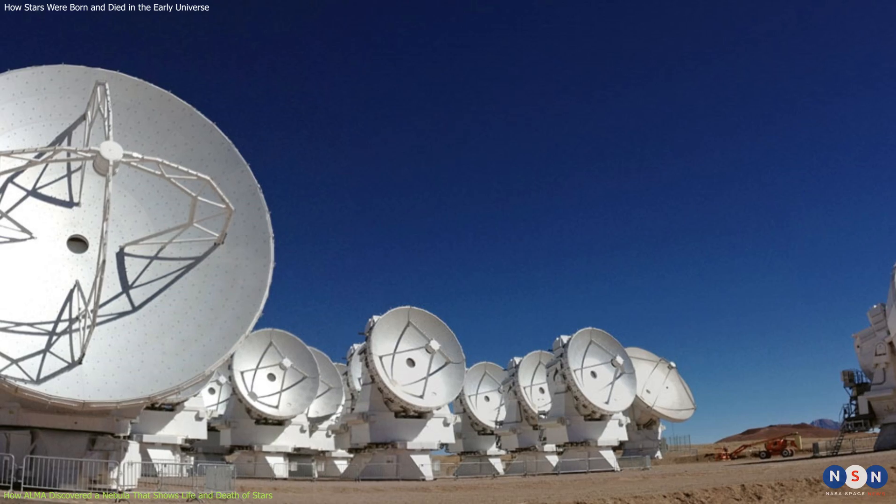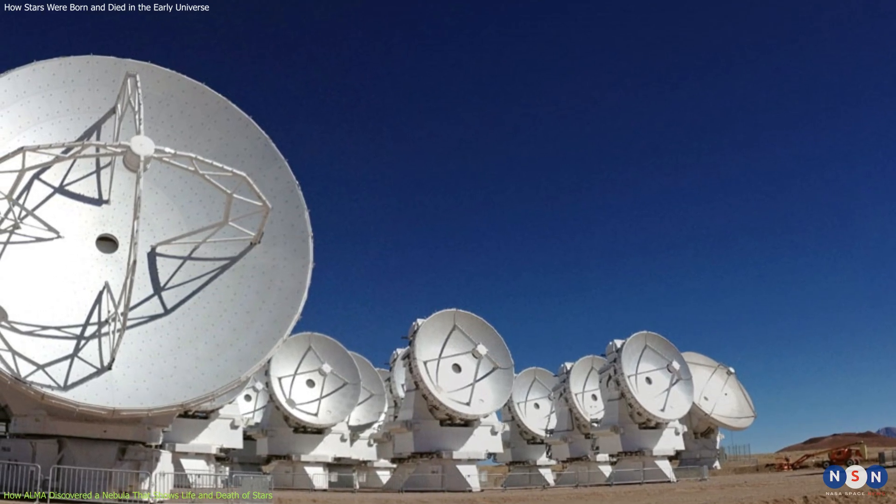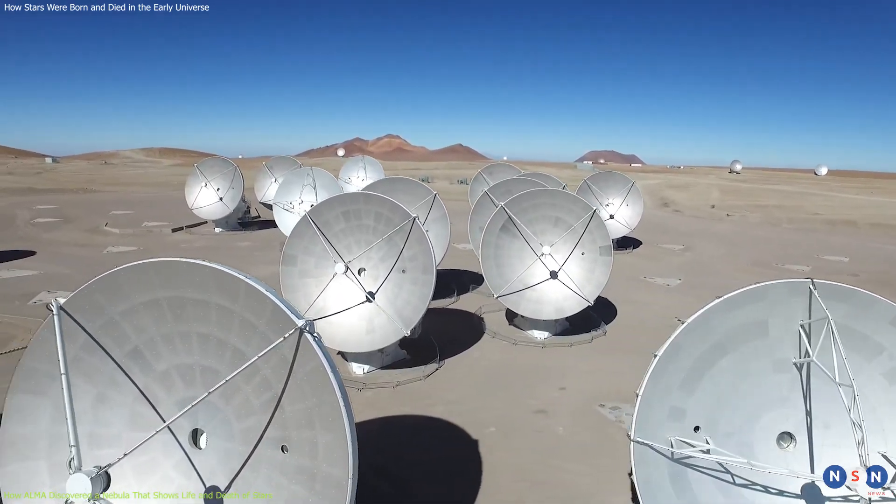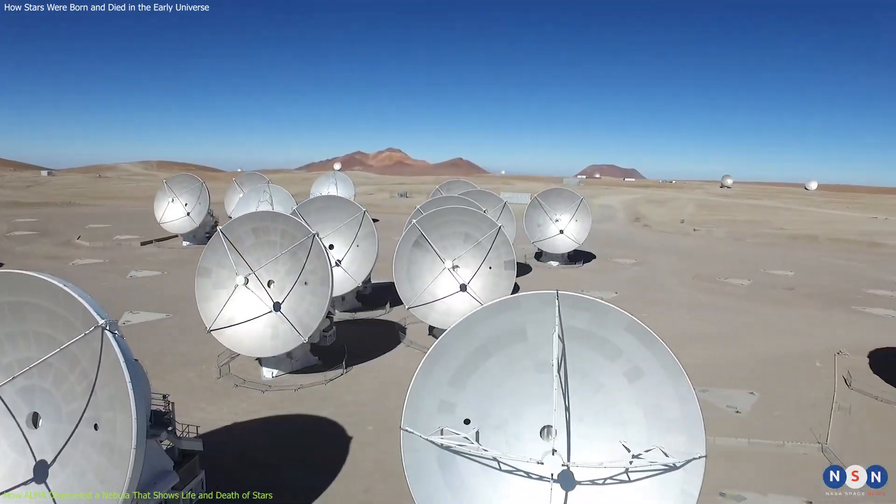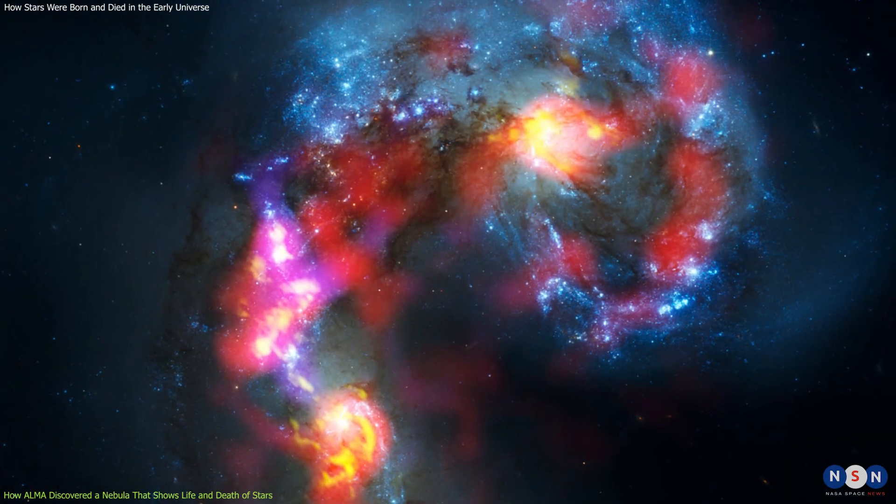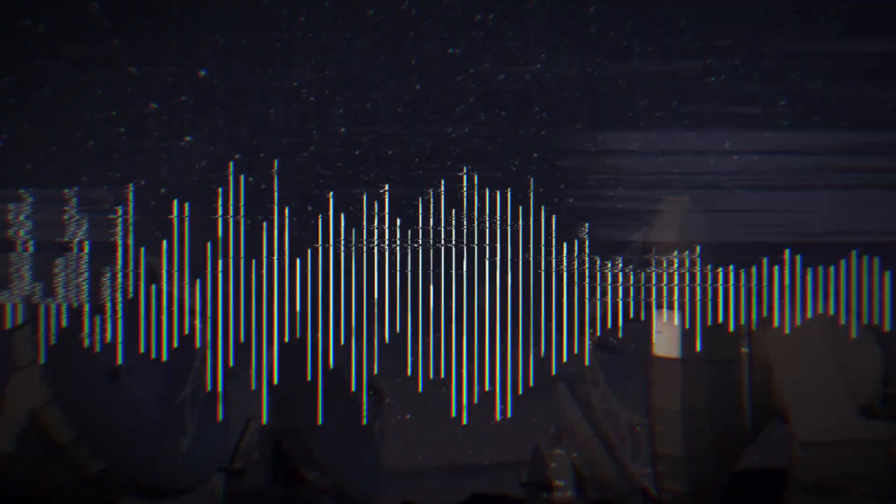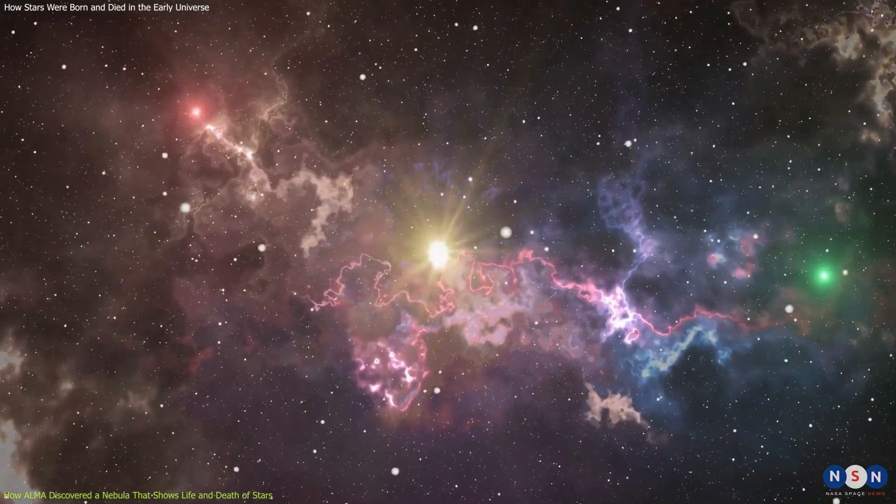ALMA is composed of 66 antennas that work together as one giant telescope. By combining the signals from these antennas, ALMA can achieve very high resolution and sensitivity, which means it can see very small and faint objects in the sky. ALMA can also observe different frequencies of radio waves, which correspond to different elements and molecules in space.